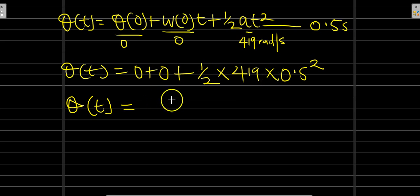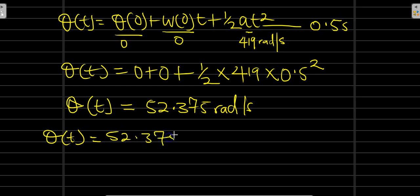But we are asked to find the number of revolutions. Therefore to find the number of revolutions we will now say that theta of t equals 52.375 times... the number of revolutions is one radian over 2π.